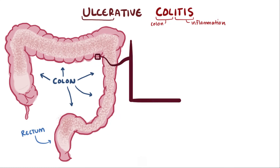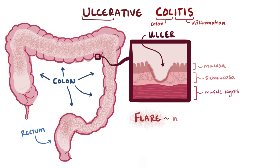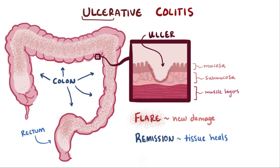These ulcers are spots in the mucosa where the tissue has eroded away and left behind open sores or breaks in the membrane. Sometimes there's a flare, which means that new damage has happened, and then there are periods of remission when the tissue starts to heal up.